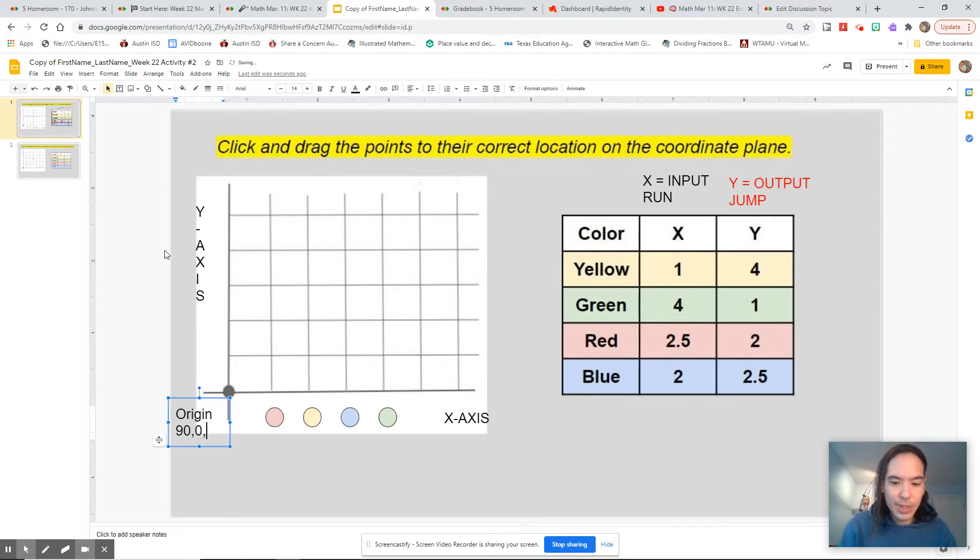And remember, the origin is 0,0. Alright, so we have just labeled all the points of our graph, so that should make this even easier.